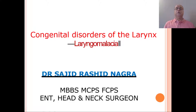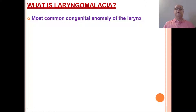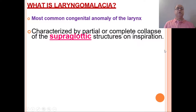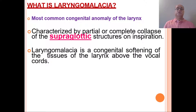This is called laryngomalacia. This is the most common congenital anomaly of the larynx. There are other congenital anomalies such as vocal cord paralysis, subglottic stenosis, and subglottic hemangioma, but laryngomalacia is the most common. It is characterized by partial or complete collapse of the supraglottic structures, especially on inspiration. Laryngomalacia is a congenital softening of the tissues of the larynx above the vocal cords.